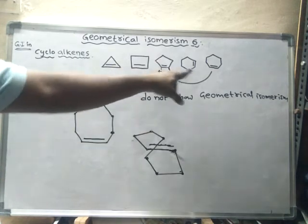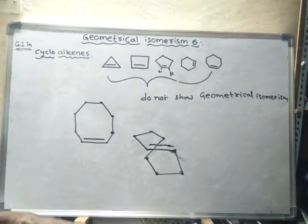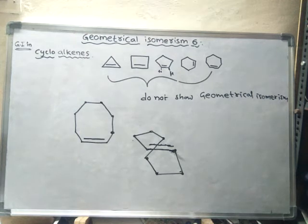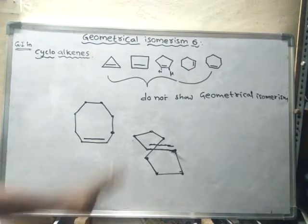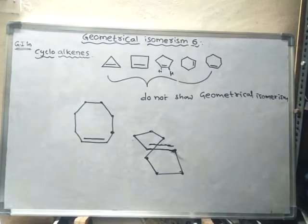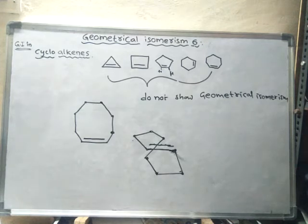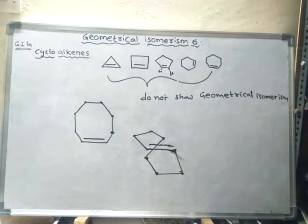With an increase in the number of atoms, the strain is distributed across more atoms and gradually decreases. Up to 7 carbons, the strain is not sufficiently distributed, but with 8 carbons the strain can be sufficiently distributed so the compound can undergo twisting.